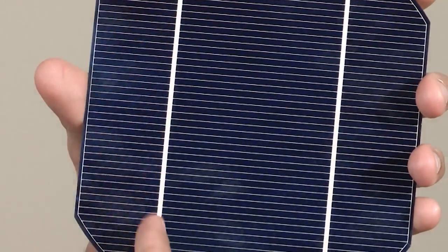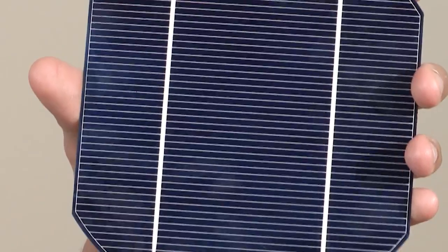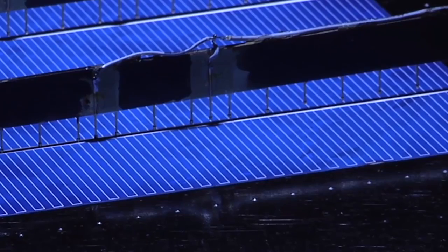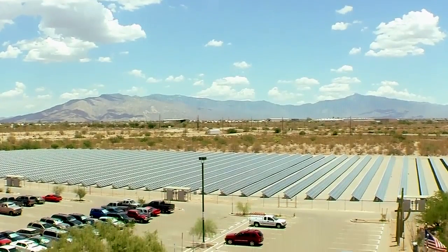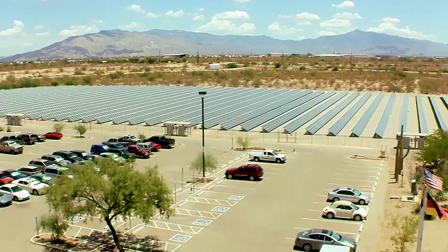As you can see on this device, the wires cover about 5 to 10 percent of the surface, and they act like metal mirrors reflecting the sunlight away, and that light can't be converted to electricity.